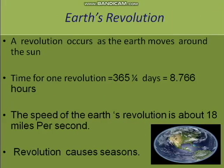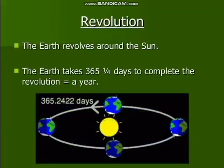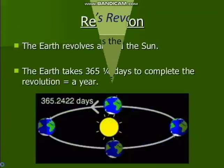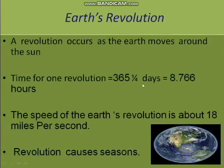Next, what do you mean by earth revolution? A revolution occurs as the earth moves around the sun. How much time will it take? It will take 365 and a quarter days — meaning 8,766 hours — to complete one revolution.